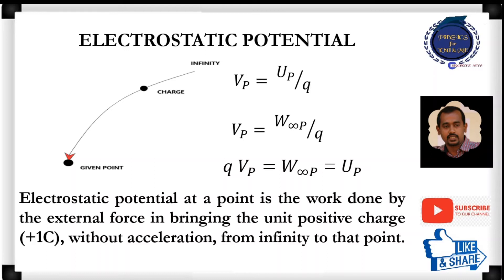Electrostatic potential at a given point is the work done by the external force in bringing the unit positive charge without acceleration from infinity to that point. It is also defined as the amount of work done per unit charge in bringing a unit positive charge from infinity to that particular point. The electrostatic potential is electrostatic potential energy per unit charge, and hence it will be measured in volts.